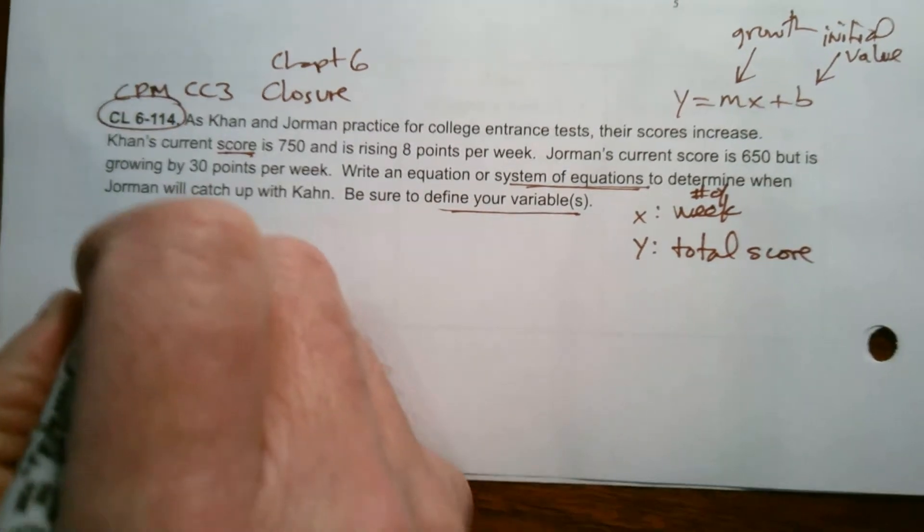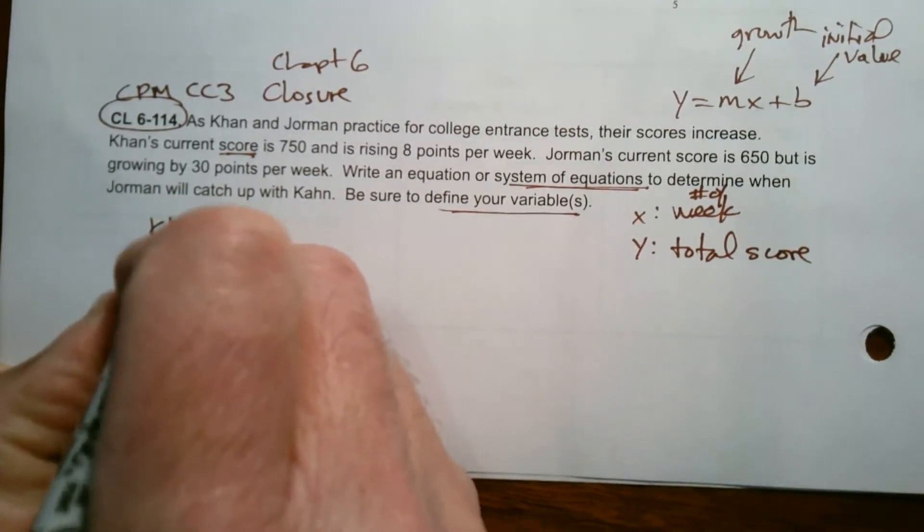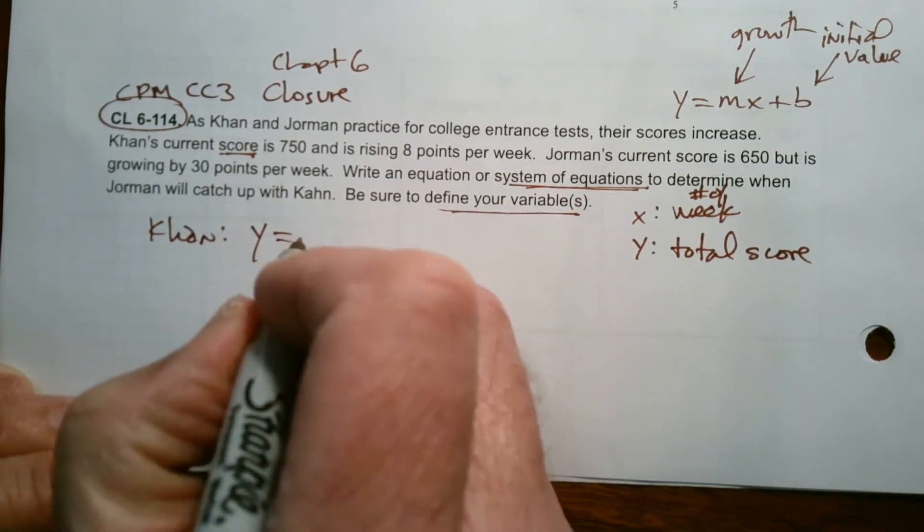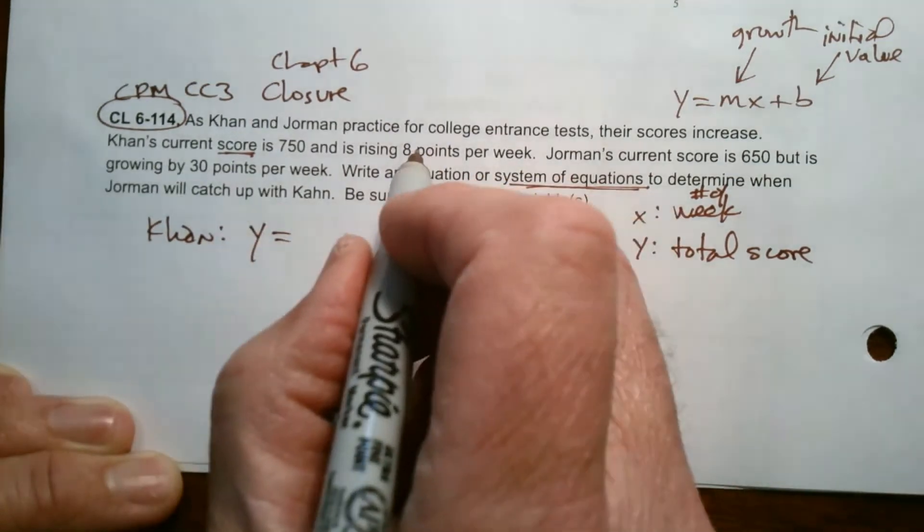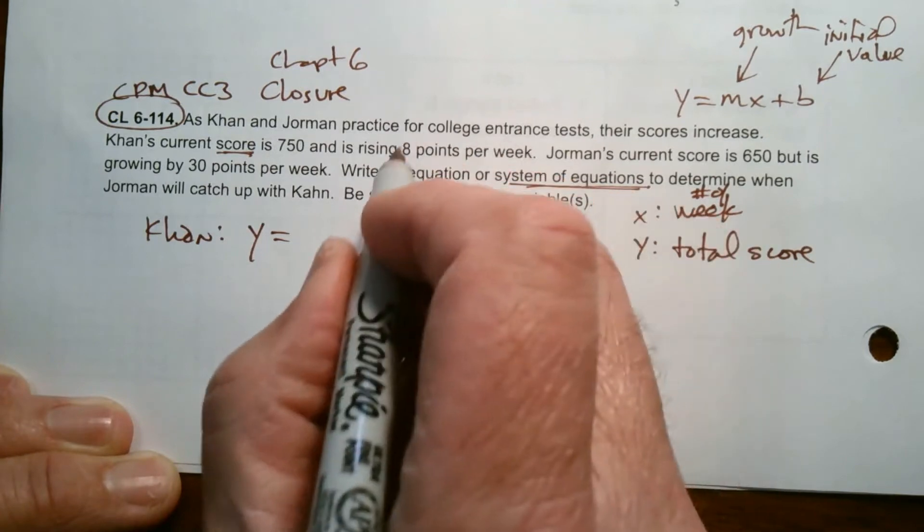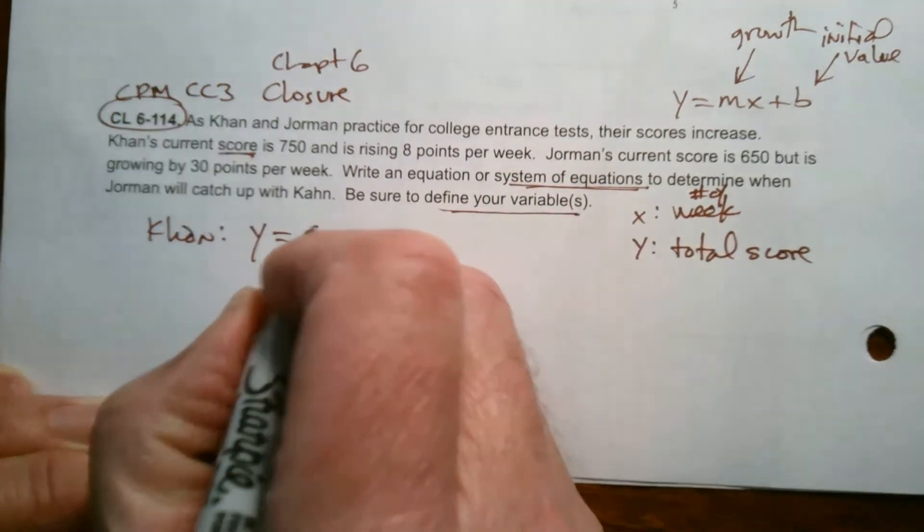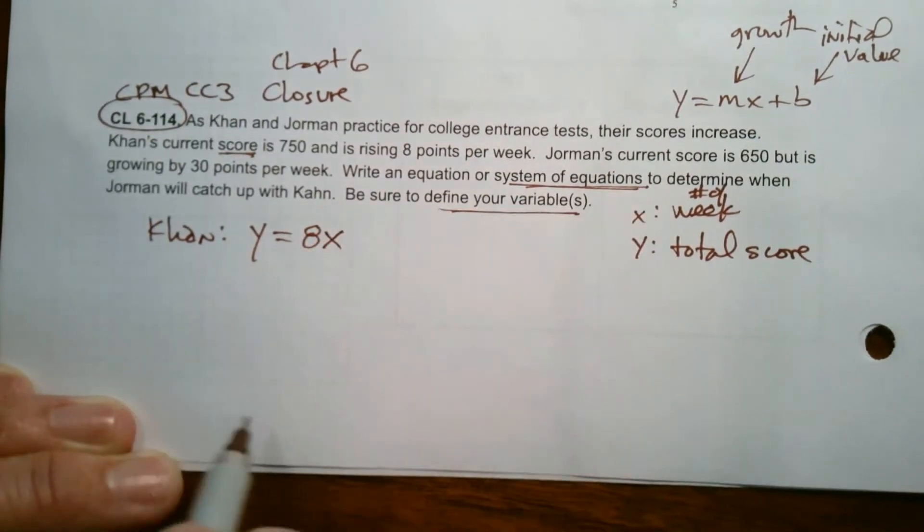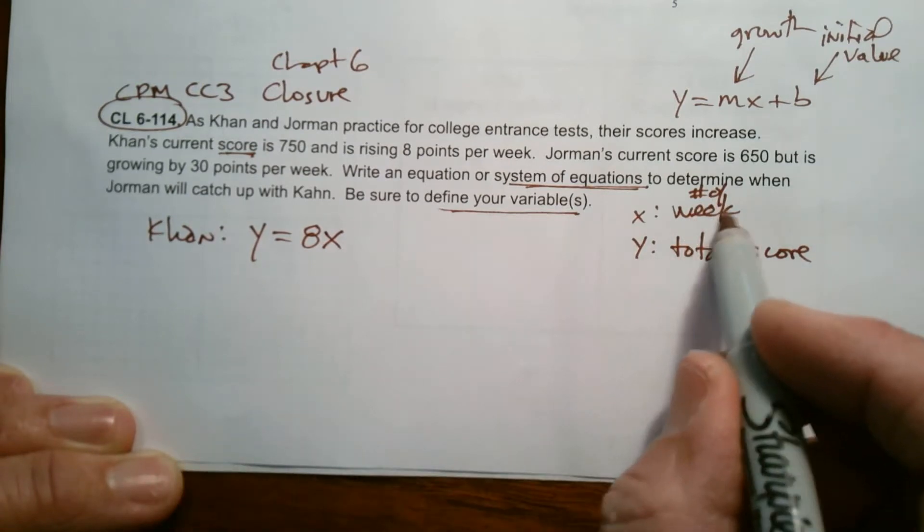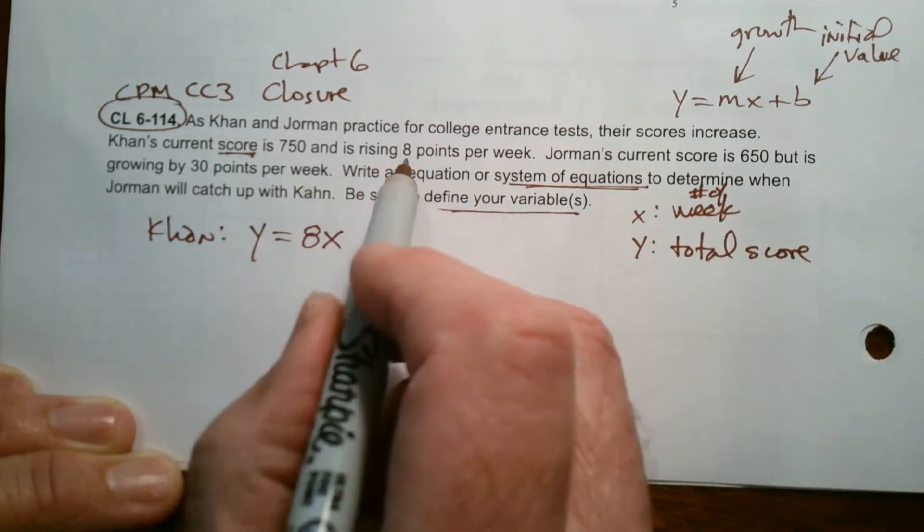So my first equation for Khan, his total score is what? Well, it's the growth of 8 points per week. So if X is the number of weeks and the growth is 8, remember growth is the coefficient of the X.